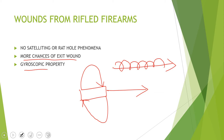The rotating motion of the bullet along its axis toward the target gives the bullet gyroscopic property or gyroscopic stability. 'Gyroscopic' is simply a term for anything that rotates along its own axis.